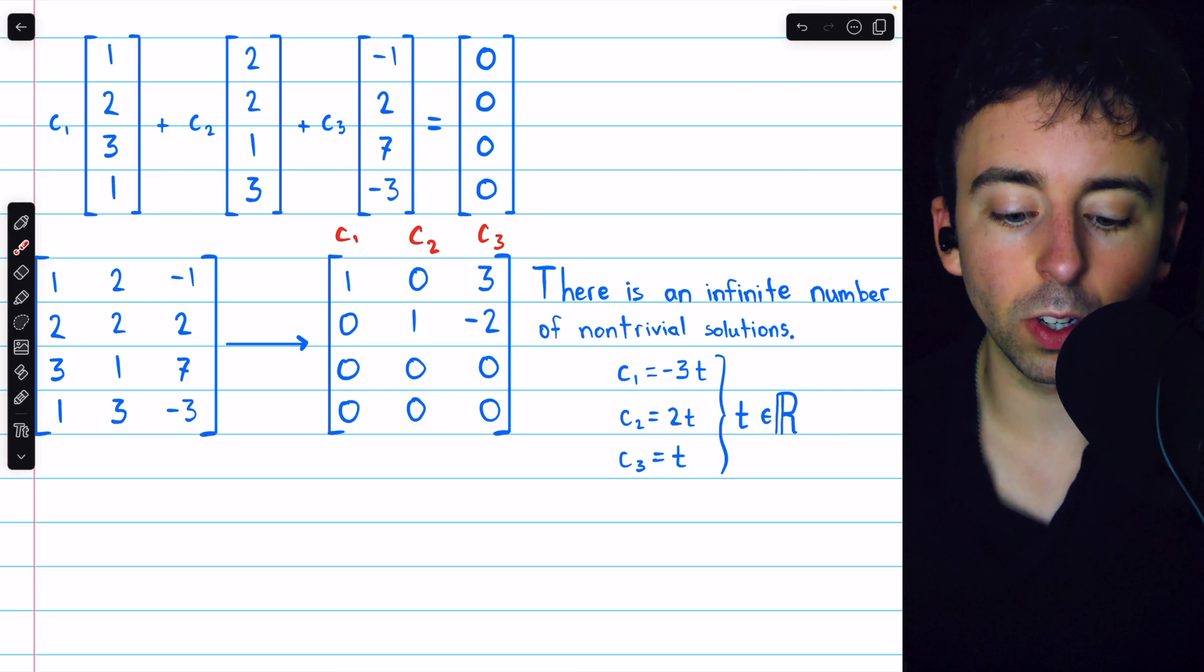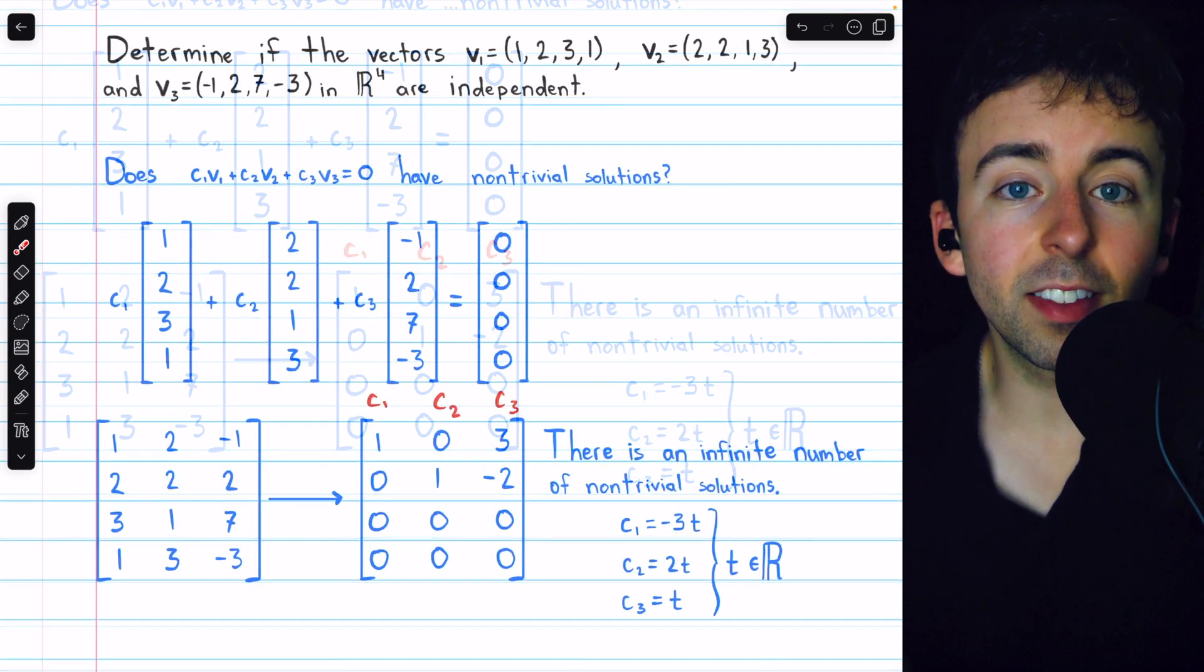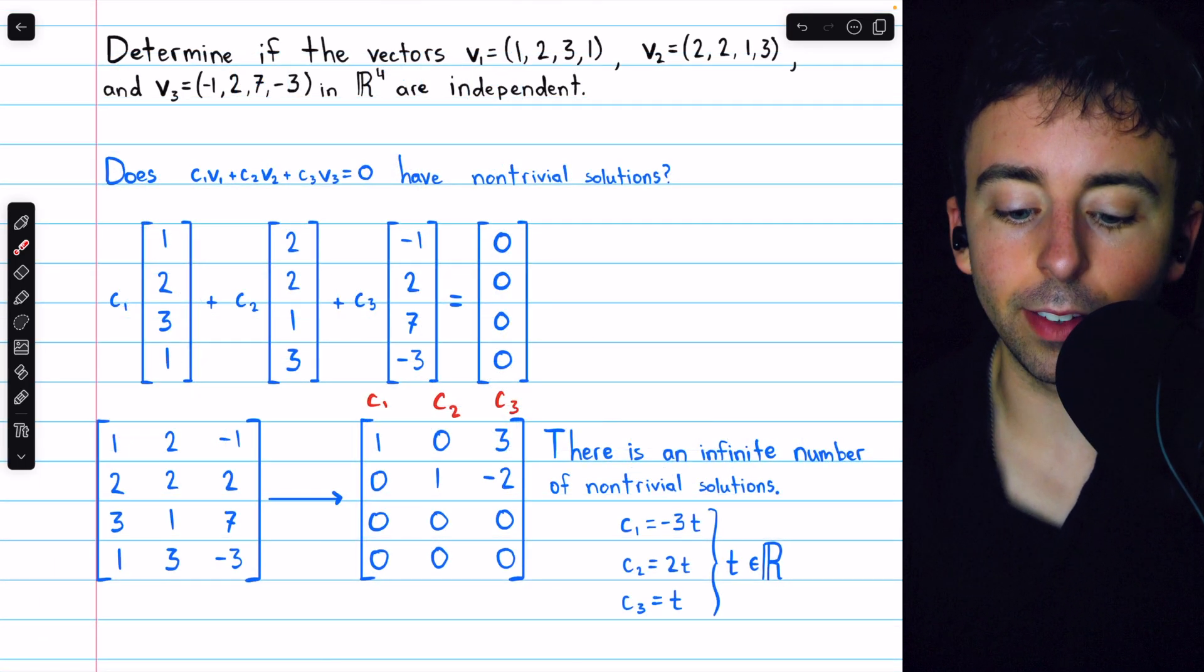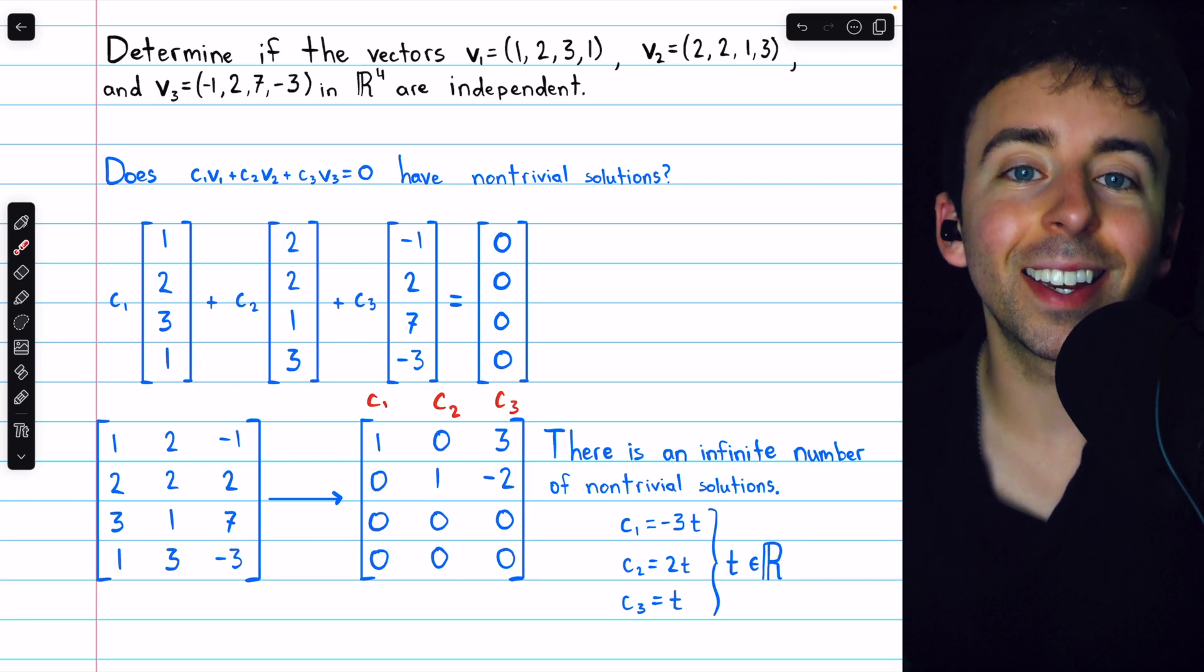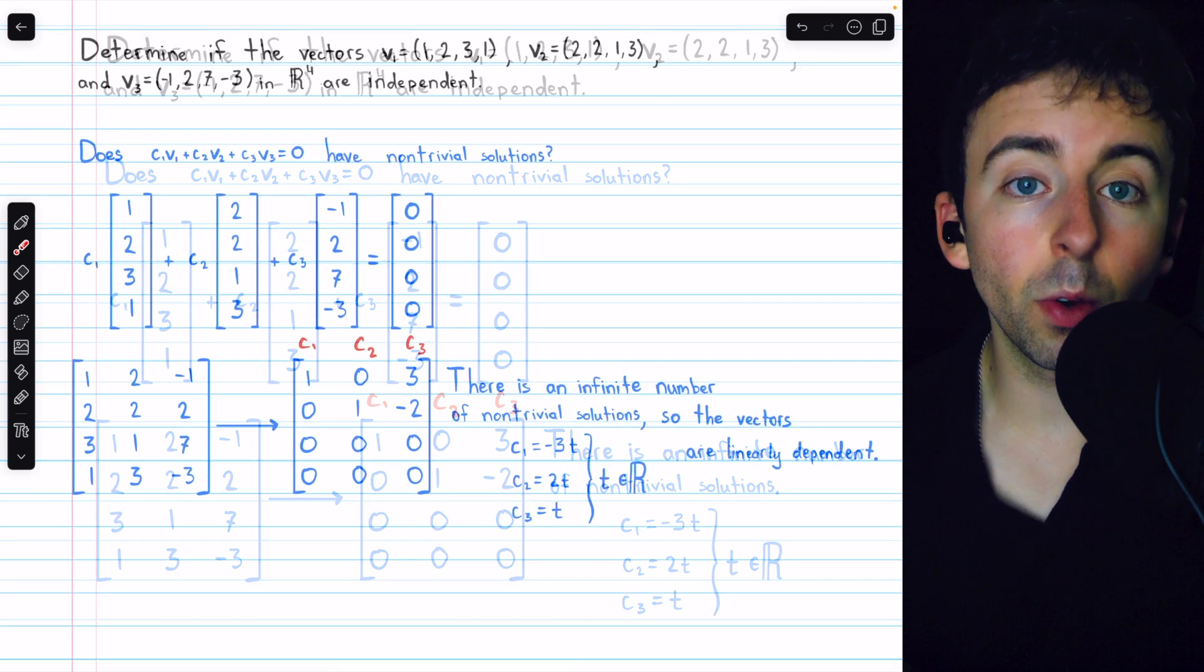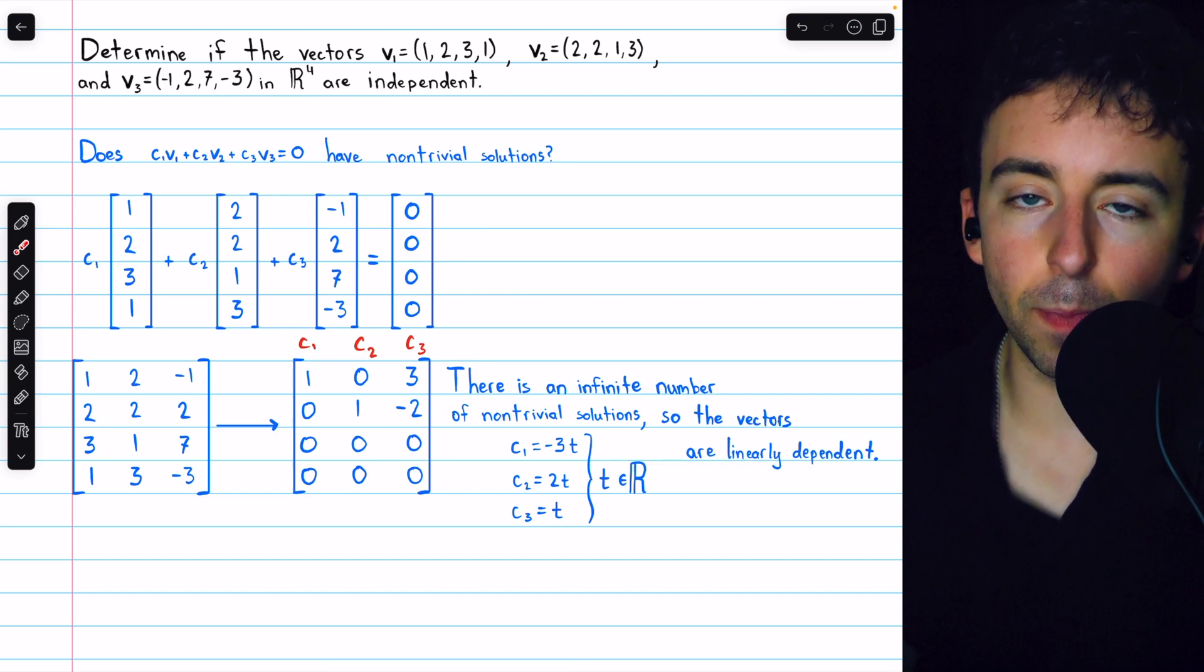Since there is an infinite number of non-trivial ways to combine these vectors and produce zero, they are not linearly independent. And so, of course, we would say the vectors are linearly dependent.